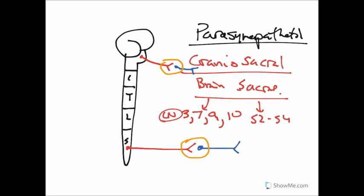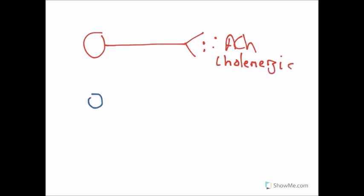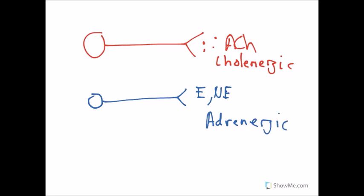Let's look at the different types of neurons in the sympathetic and parasympathetic divisions. There are two types. If a neuron produces the neurotransmitter acetylcholine, ACh for short, we name these neurons cholinergic. If the neuron produces epinephrine or norepinephrine, which is adrenaline, we call them adrenergic. These names are quite important.